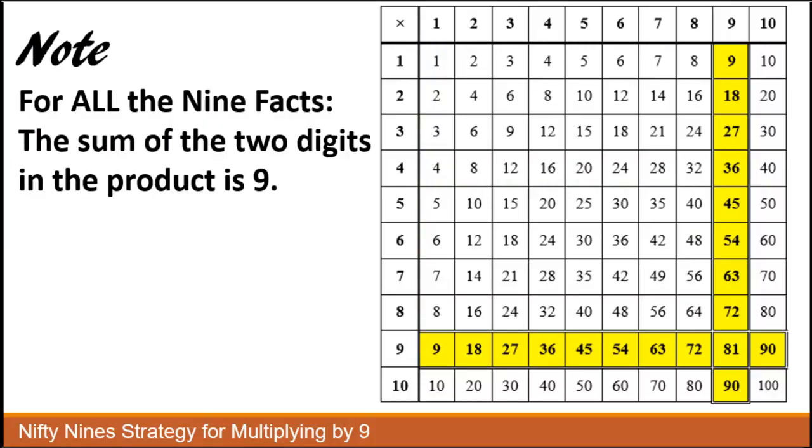It's important to note that all the 9 facts for 1 times 9 through 10 times 9, if you look at the 2 digits, the 2 digits always add up to 9. 3 and 6 is 9, 4 and 5 is 9, 7 and 2, even 9 and 0 is 9.